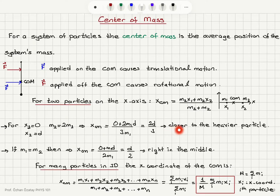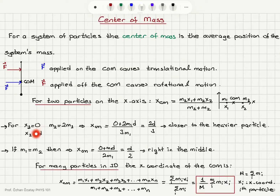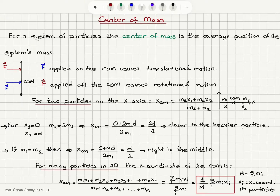Another special case: if m1 equals m2, the center of mass is m1*0 plus m1*d divided by the total mass 2*m1, which gives d/2. So if the particles have the same mass, the center of mass is right in the middle — we have a symmetric mass distribution around the center of mass.